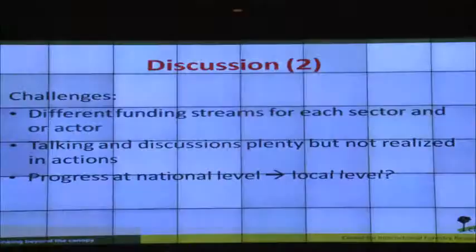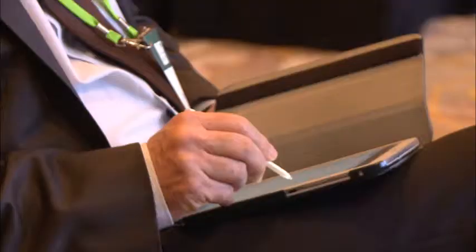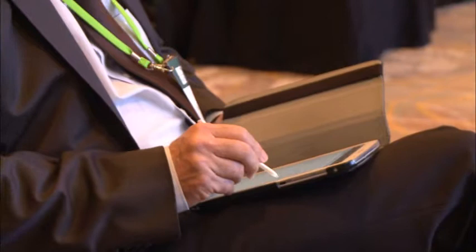There is progress at the national level — the one map policy, the moratorium, and new institutions — but it is still not enough. When information exchange mostly happens within actor groups, can real collaboration exist? And what does this mean for transformational change? Transformational change requires information exchange that is still not happening fully.